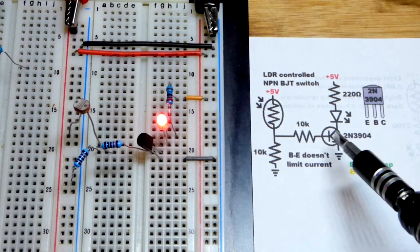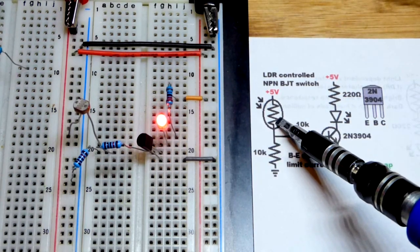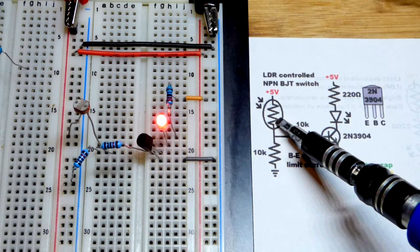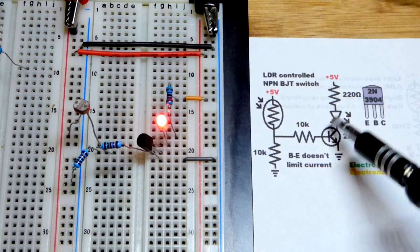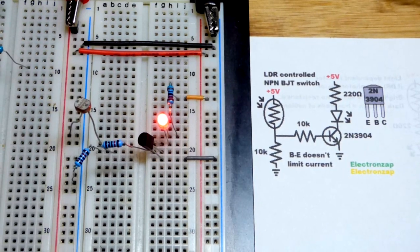So now in this video, we're going to look at using a light-dependent resistor, you could also call it a photoresistor, to control an NPN bipolar junction transistor wired as a switch.